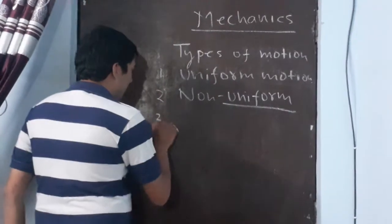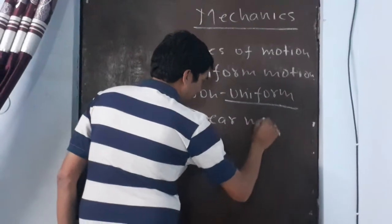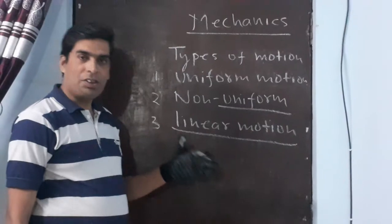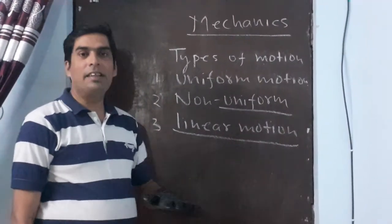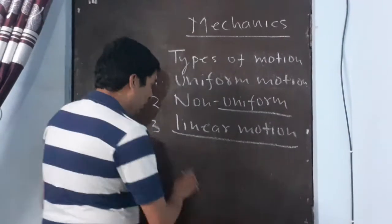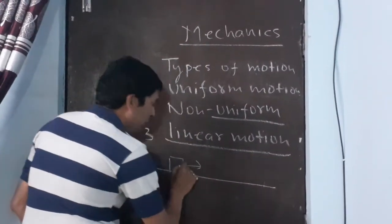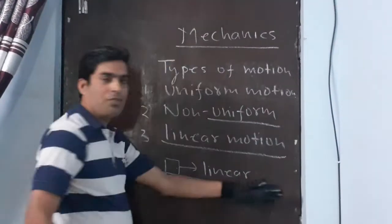Next we have linear motion. The motion of the body in a straight path or straight line is termed as linear motion. Just like a car is running on the road, or a body is moving on this track. So the motion of this body is linear because it is going in a straight path.